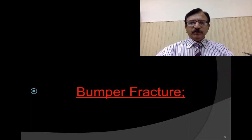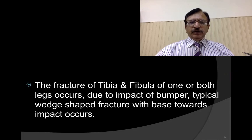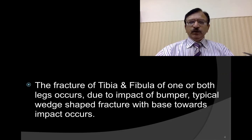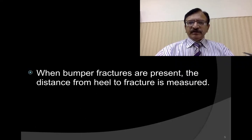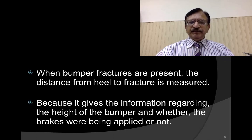Significance of bumper fracture — this is a very important injury. The fracture of tibia and fibula of one or both legs occurs due to the impact of a bumper. A typical wedge-shaped fracture with the base towards the impact occurs. When bumper fractures are present, the distance from the heel to the fracture is measured, as it gives information regarding the height of the bumper and whether the brakes were applied or not.